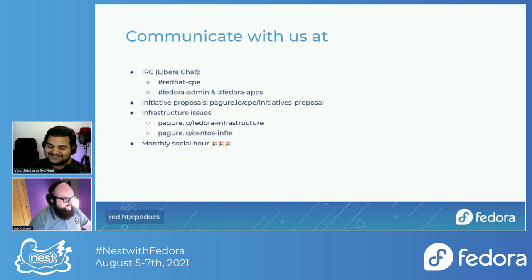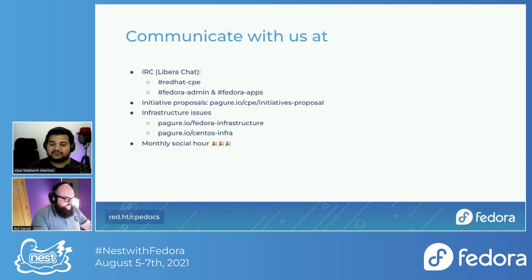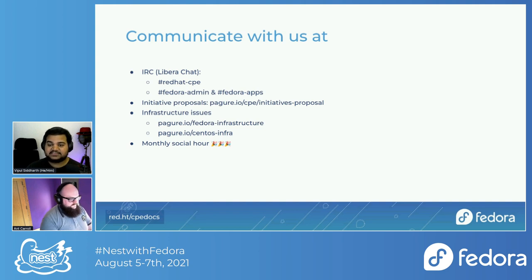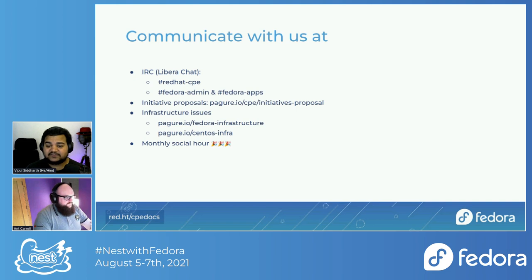How do you communicate with us? On IRC on Libera.Chat, we are on Red Hat CPE if you want to talk to the management side of things — how the team interacts, performs, and our workflows. If you want to talk specific to Fedora infrastructure, it would be Fedora admin; and Fedora apps for our applications. If you want to propose new initiatives, community members can propose an initiative and we take it, prioritize it, do some research, and depending on how important it is and whether it fits our mission statement, we take it on. The link is pagure.io CPE initiative proposal. Infrastructure issues can be filed on Fedora infrastructure, and for CentOS related things, it's CentOS Infra. We always recommend opening a ticket so we can track it.